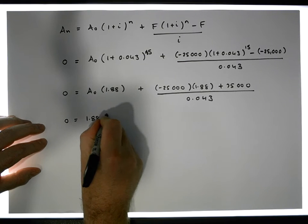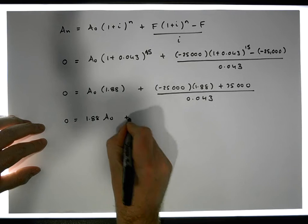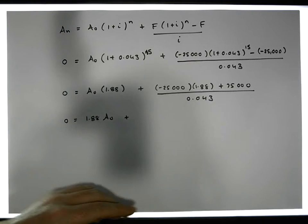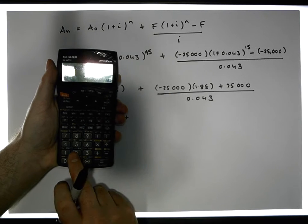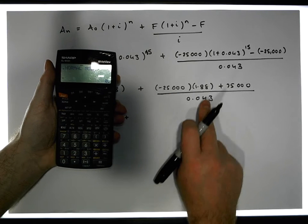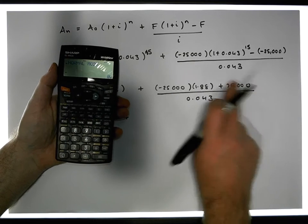Plus, well this is going to be 25,000 euros, well minus 25,000 euros times 1.88 plus the 25, so let's just do it the other way, it's 25,000 euros.